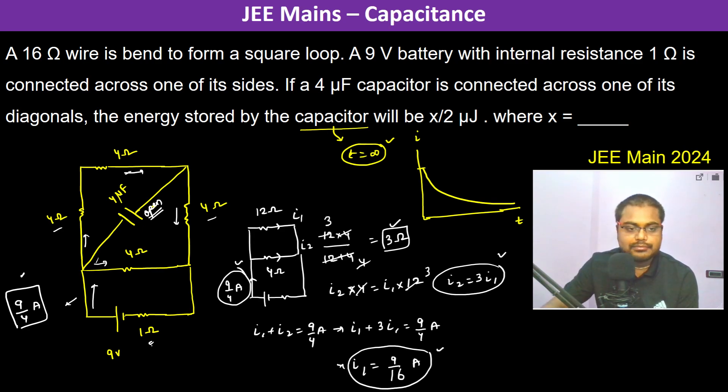So 9 by 16 ampere is going to flow in these resistances. Now if you see the potential difference across this 4 microfarad capacitor is going to be the same potential difference across 8 ohms.